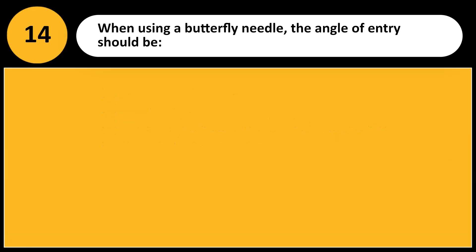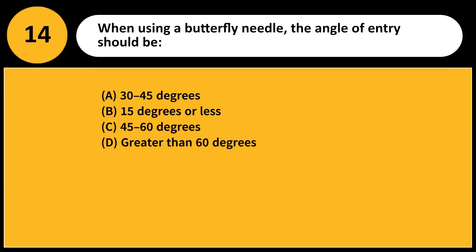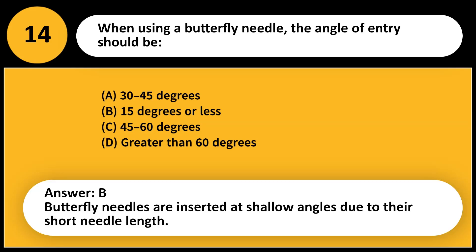When using a butterfly needle, the angle of entry should be: A. 30 to 45 degrees. B. 15 degrees or less. C. 45 to 60 degrees. D. Greater than 60 degrees. Answer: B. Butterfly needles are inserted at shallow angles due to their short needle length.